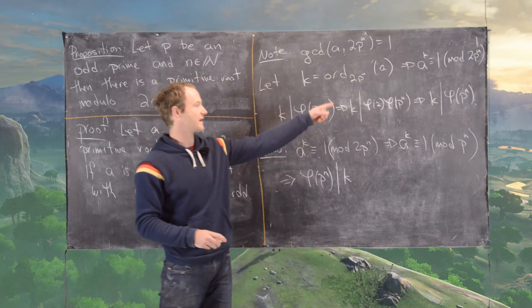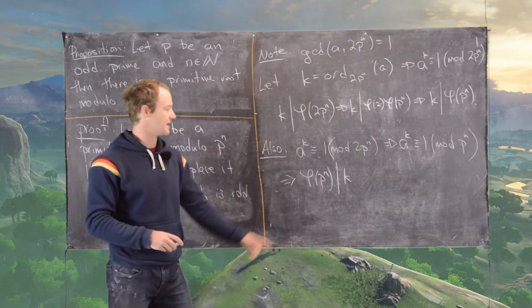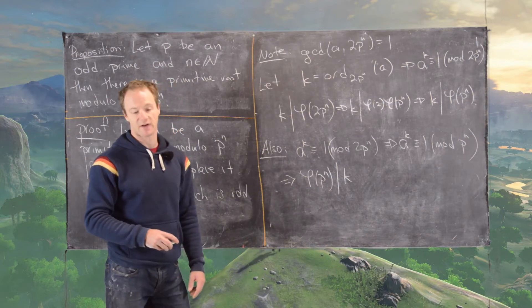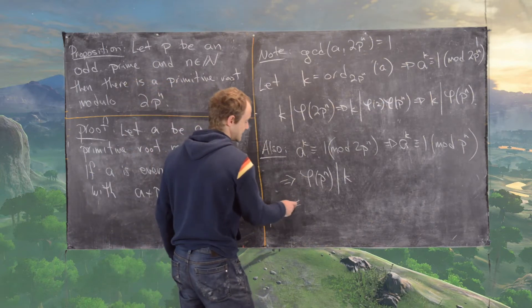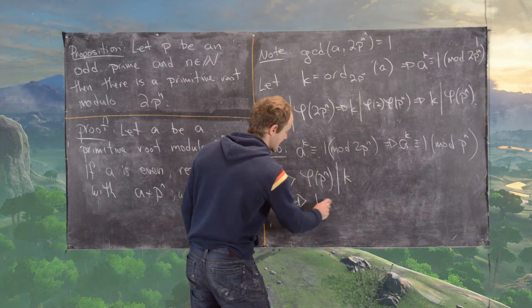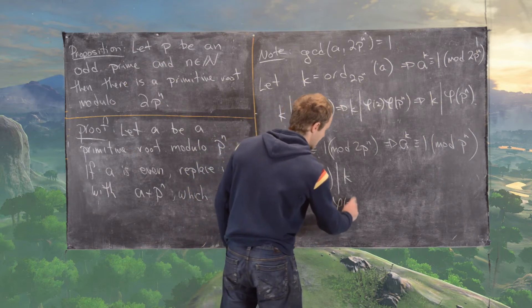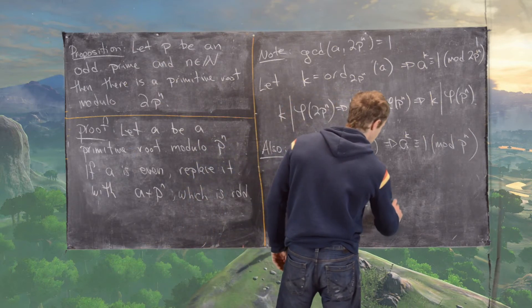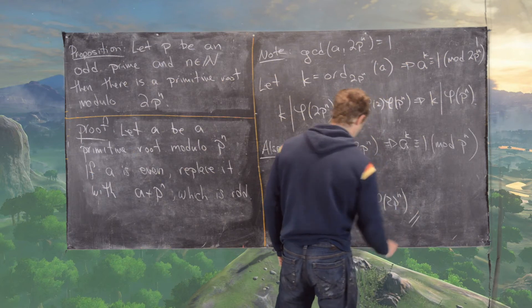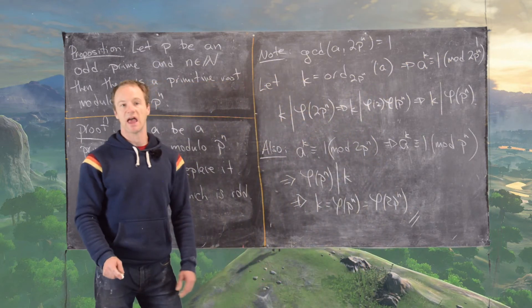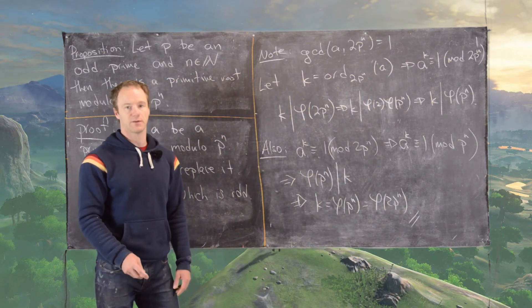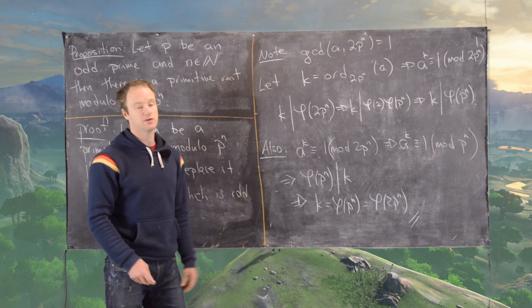But notice what we have here. We have k divides phi(p^n), and we have phi(p^n) divides k. This leads us to k equals phi(p^n), which is the same as phi(2p^n), which tells us that this a was in fact a primitive root modulo 2p^n.